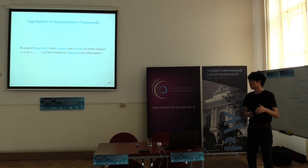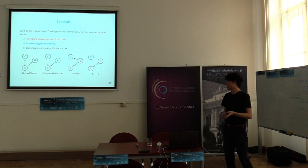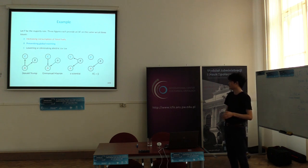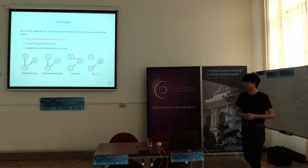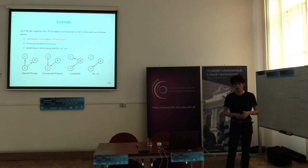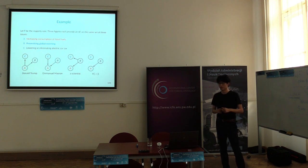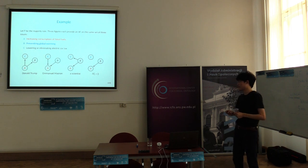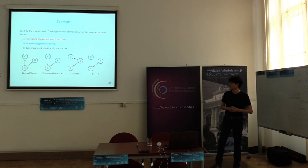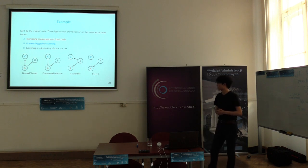Here is a simple example. There are three arguments: A is increasing consumption of fossil fuels, B is preventing global warming, and C is lowering electricity costs. There are three persons: Donald Trump considers that A attacks C and A attacks B are acceptable. Emmanuel Macron considers that B attacks A and B attacks C are acceptable. The third person considers B attacks C and A attacks C are acceptable. Using the majority rule, after aggregation, only B attacks C is accepted, because both Macron and the third person accept it.